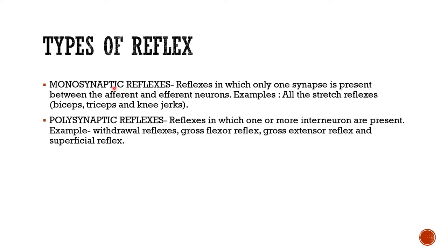There are different types of reflexes: monosynaptic or polysynaptic, depending on the number of synapses in the reflex arc. Monosynaptic reflexes have only one synapse between the afferent and efferent neuron — examples include all stretch reflexes such as biceps, triceps, and knee jerks involving the quadriceps muscle. Polysynaptic reflexes have one or more interneurons — examples are withdrawal reflexes, flexor reflex, extensor reflex, and superficial reflexes.